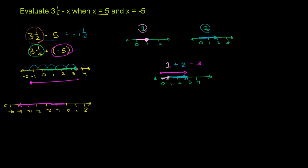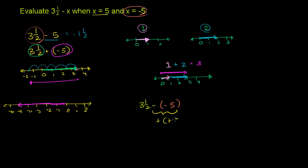Now let's try the same thing when x is equal to negative 5. The expression becomes 3½ minus negative 5. Subtracting a number is the same thing as adding its opposite, so subtracting negative 5 is the same thing as adding positive 5. This is just the same as 3½ plus 5. When you subtract a negative, the two negatives cancel out — subtracting a negative is the same as adding a positive.